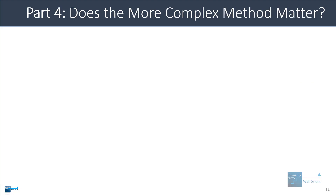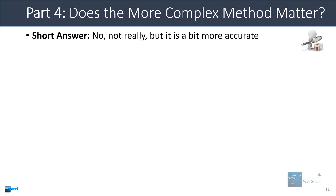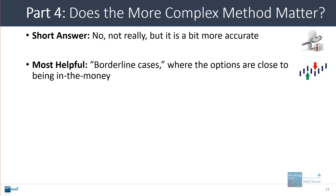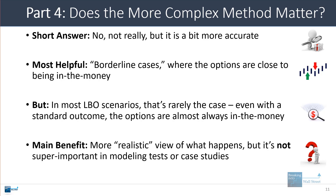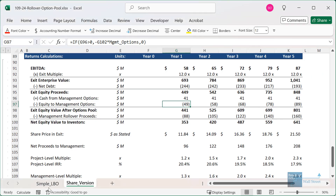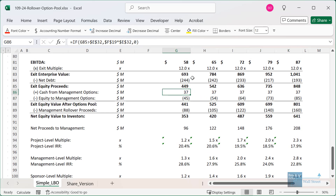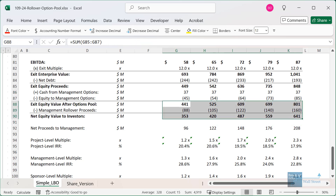Does the more complex method matter? The short answer is no, not really, but it is a bit more accurate and closer to real life. It's most helpful in borderline cases where options are close to being in or out of the money. In most LBO scenarios, that's not common — options are typically in the money if the deal does even somewhat well, since exit equity value is almost always higher than initial equity invested. If it's a completely disastrous deal, the options won't be close to in the money either. If you're pressed for time in a case study or modeling test, the simple method is perfectly fine and still gets you approximately the same numbers.